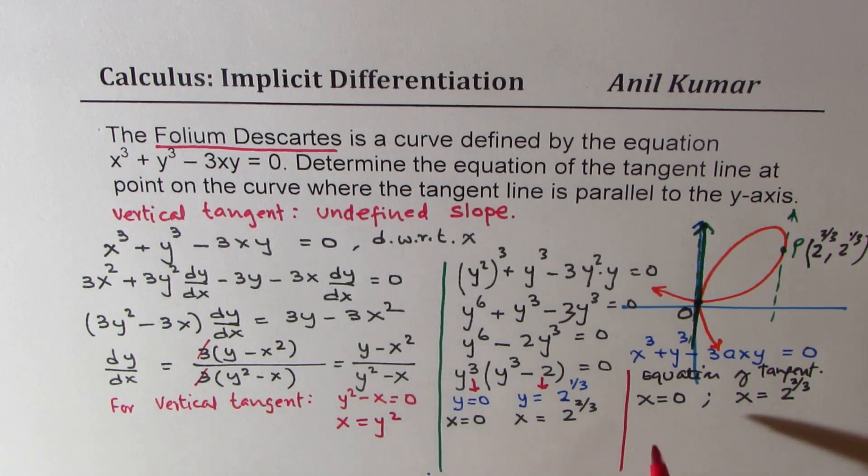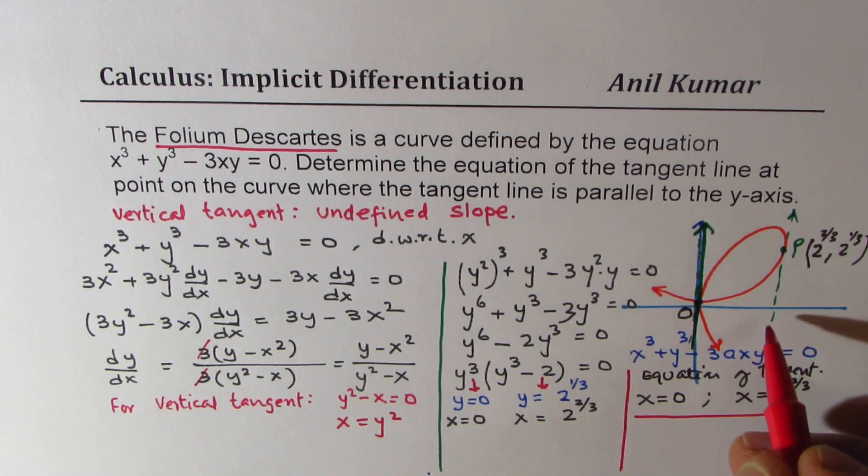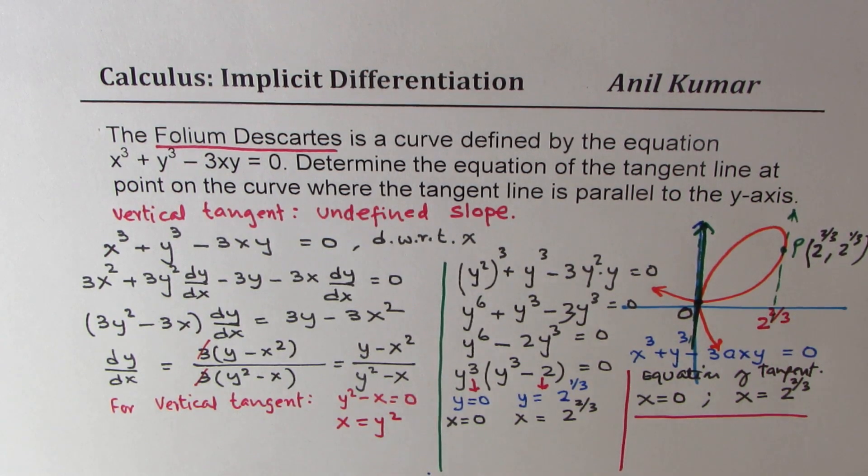So that's the answer. This point is 2 to the power of 2 over 3. So that is how you can get your equation.